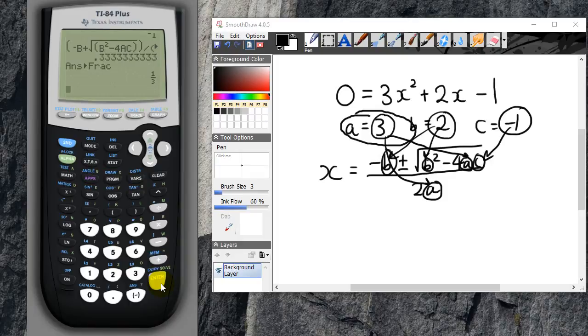Now to test that this actually does work, I'm going to substitute 1 over 3 back into the formula. Let's just try it out. So 3 times the answer squared.